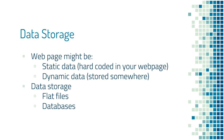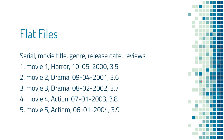Today you might visit a web page and find two entries; tomorrow you might visit and find five entries. These changes are not hard-coded in your system. To deal with dynamic data, you have to store it somewhere so that whenever a visitor comes to your website, you can fetch this data and populate it on the web page. The two main data storage options are flat files or a database.